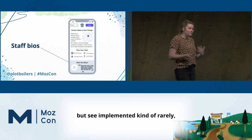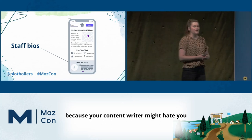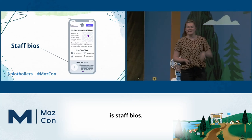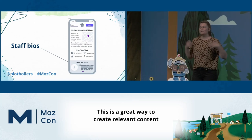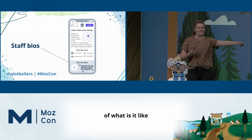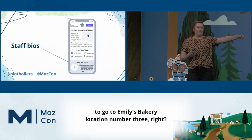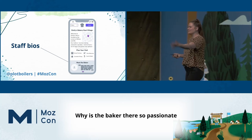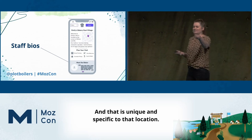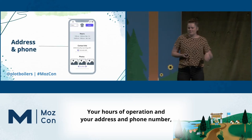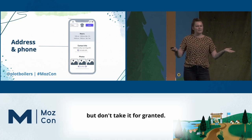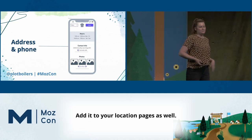Something I recommend a lot but see implemented rarely — because your content writer might hate you for asking them to do it over and over — is staff bios. This is a great way to create relevant content that gives people a realistic understanding of what it's like to visit a specific location. Why is the baker there so passionate about red velvet cupcakes? That is unique and specific to that location. Your hours of operation, address, and phone number are the most rudimentary form of unique value content, but don't take them for granted — add them to your location pages as well.